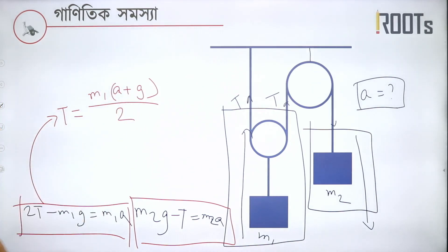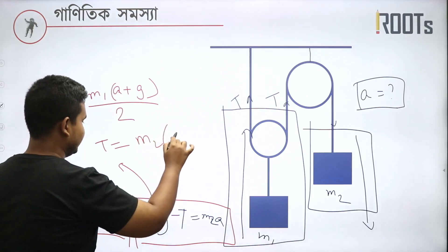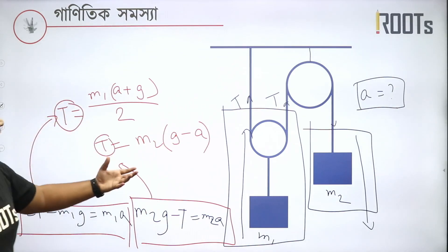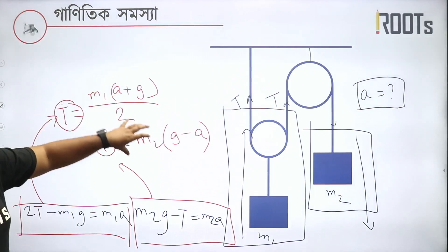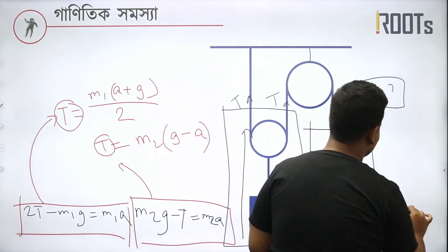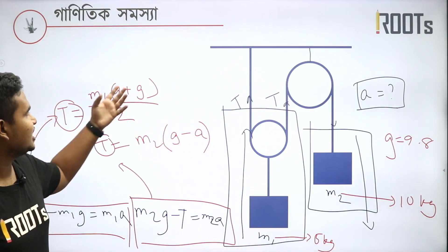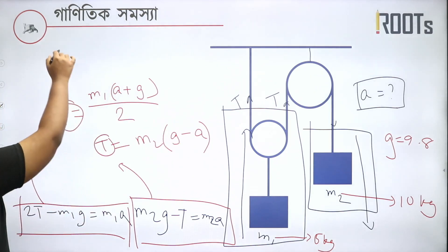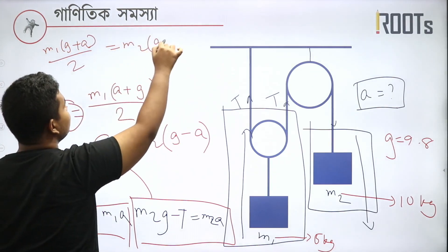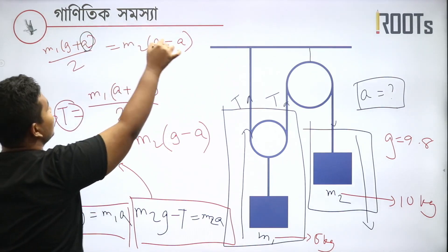I will write A equal to ATR. AT equals M1, M2. Let us give values: M1 is 10, M2 is 10, and g is 9.8. So we have an equation: M1(g plus a) divided by 2 equals M2(g minus a). This whole equation — if you know the A value, you would know your ATR value.